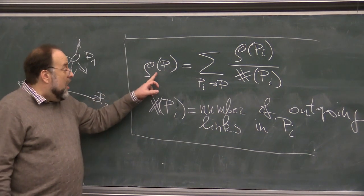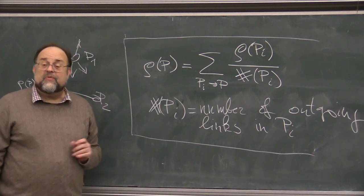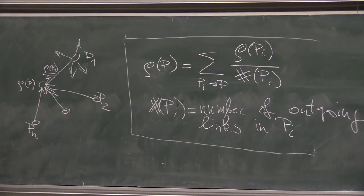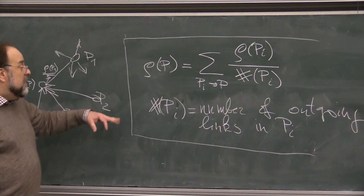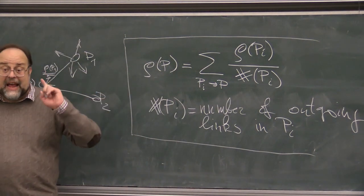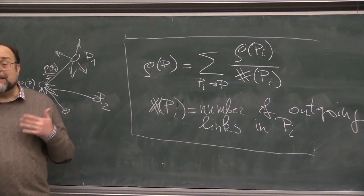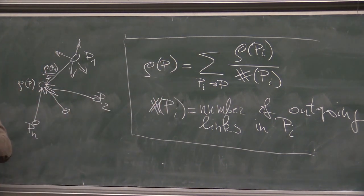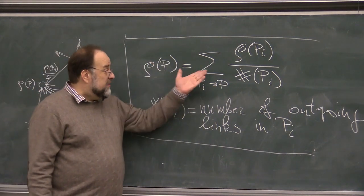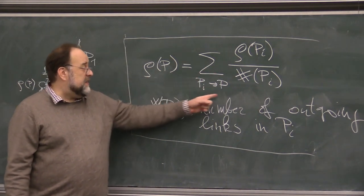Right? Now, this is all nice and good, but notice, even if this worked, this does not give you a method of computing the rank, because in order to compute the rank of P, you need to know the ranks of all pages that point to P. But in order to compute the rank of PI, maybe P also points to PI, so it's a vicious circle, right? It's not a recipe how to evaluate ranks. So this is then not an explicit formula, but an implicit formula.